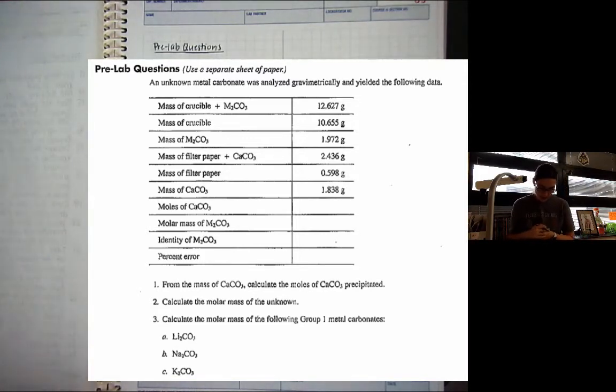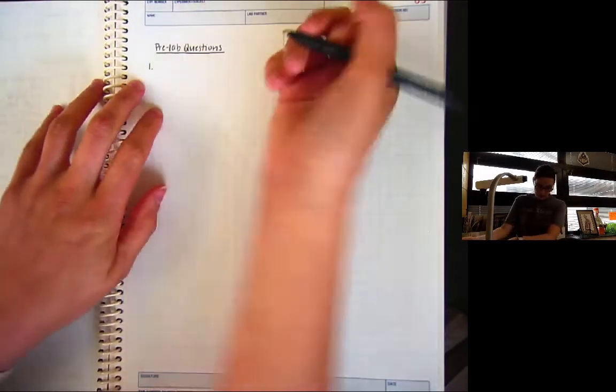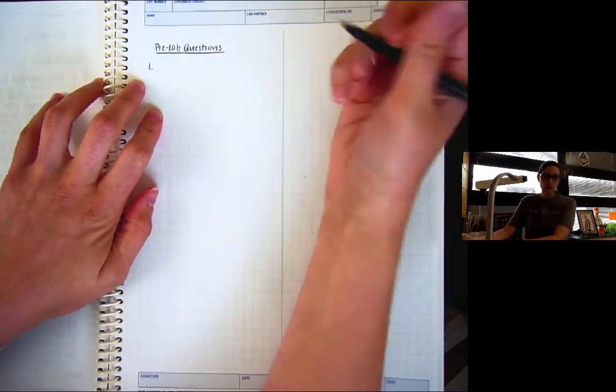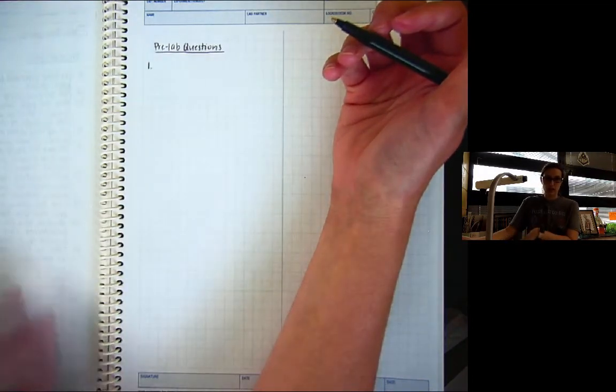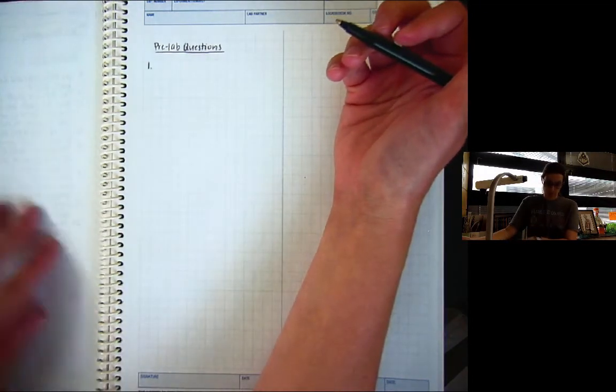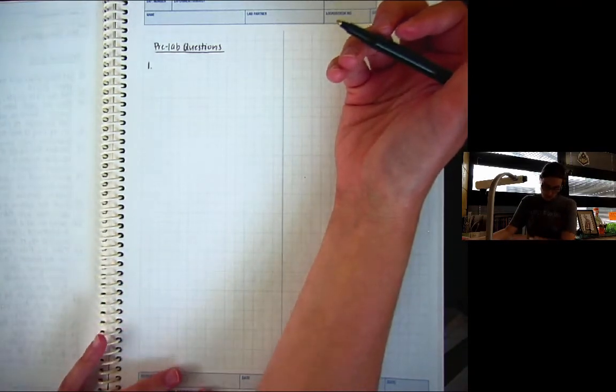So then underneath the data table, it says, number one, from the mass of CaCO3, calculate the moles of CaCO3 that precipitated. So pre-lab question number one. I don't even have to worry about labeling these because these are just pre-lab questions. You only have to label your calculations, which are in your post-lab.